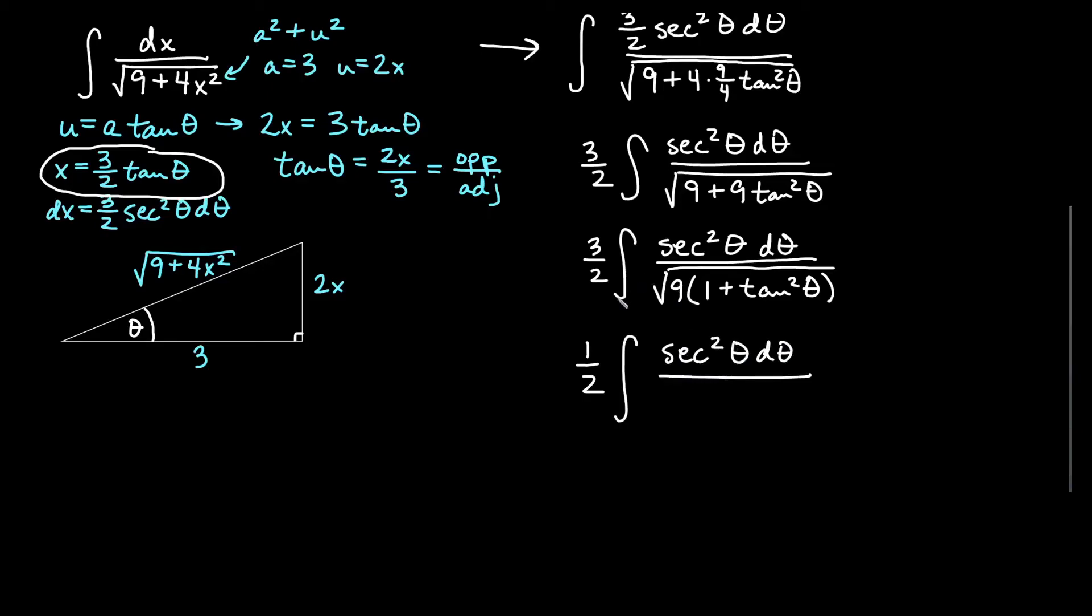Once I've factored out the 9, 1 plus tan squared theta would be secant squared theta. So I have secant squared theta in the root still. The root will reduce the square. Everything's in quadrant 1, so all things are positive.